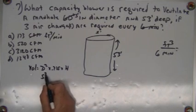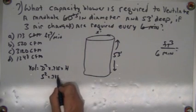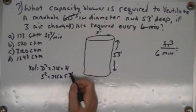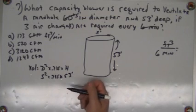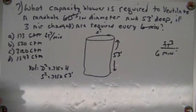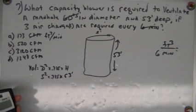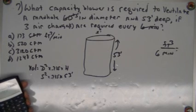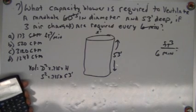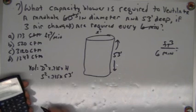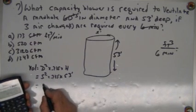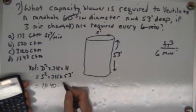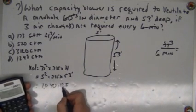So I'm going to go 5 squared times 0.785 times 53 feet. Let's see here, 5 times 5 times 0.785 times 53, and that's going to give me 1040.125, that's close enough.